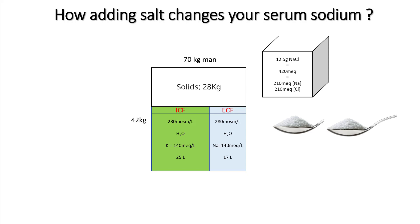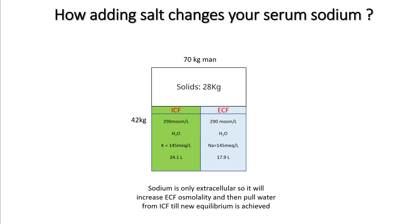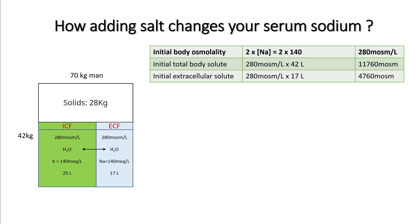If you give this patient 2 teaspoons of salt — approximately 420 mmol, of which 210 will be sodium and 210 will be chloride — the salt you added is going to go to the ECF because sodium is mostly an extracellular ion. Your sodium will rise to 152 and your ECF osmolality will increase to 304. Since there's a difference in osmolality, water will come out of the intracellular compartment into the extracellular compartment. Once they equilibrate, you end up with a sodium of 145, total osmolality of 290, ECF volume of 17.9, and ICF volume reduced to 24.1.